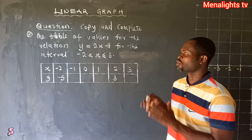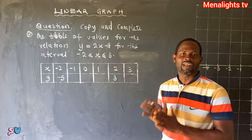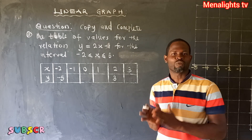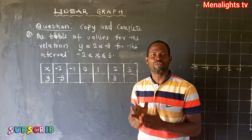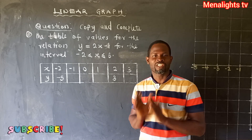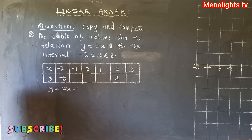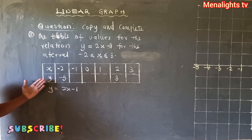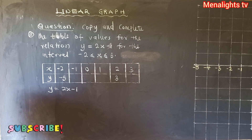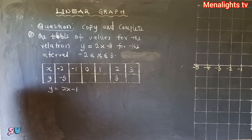Our question today is: copy and complete the table of values for the relation y = 2x - 1 for the interval -2 ≤ x ≤ 3. Looking through the table, you realize that some places are not filled in, so we have to find the values and complete the table.